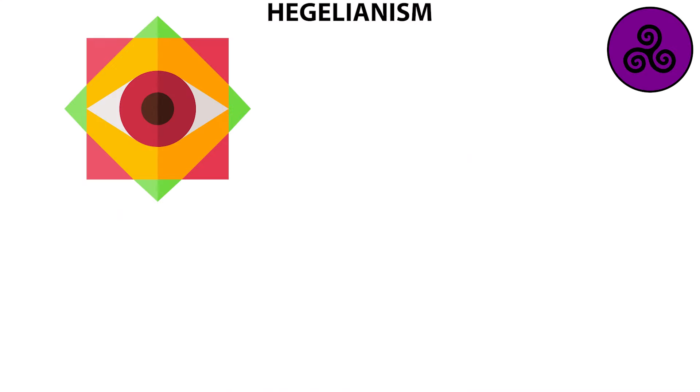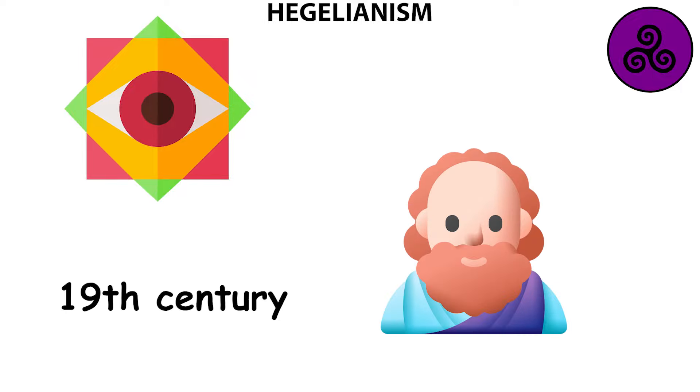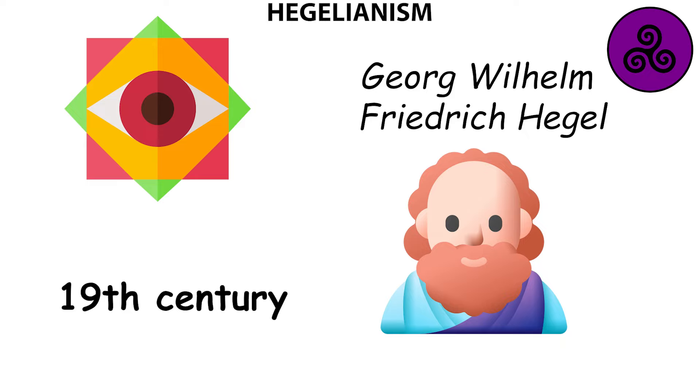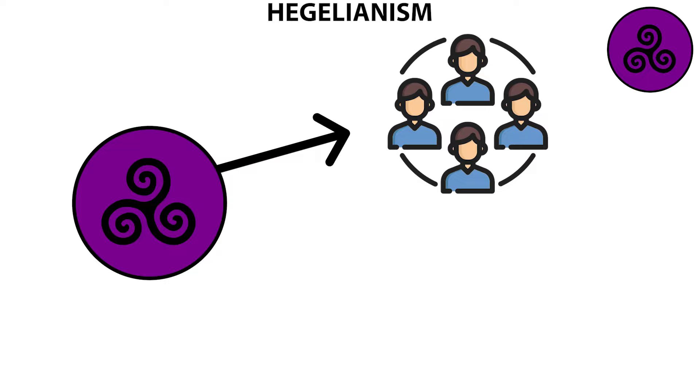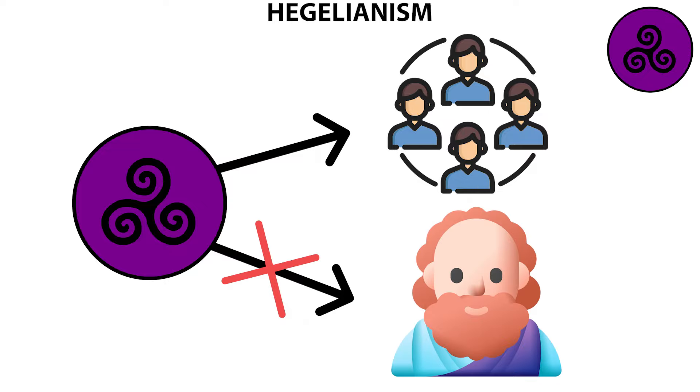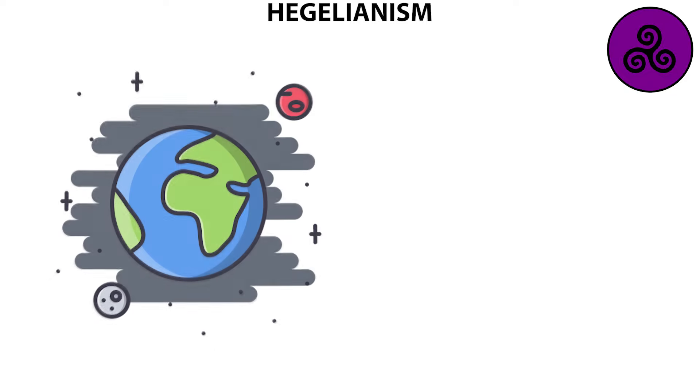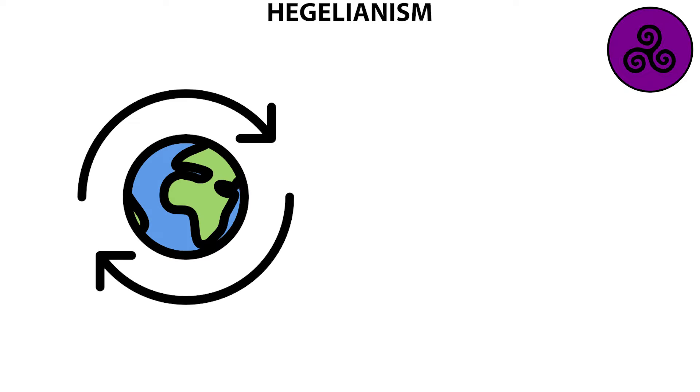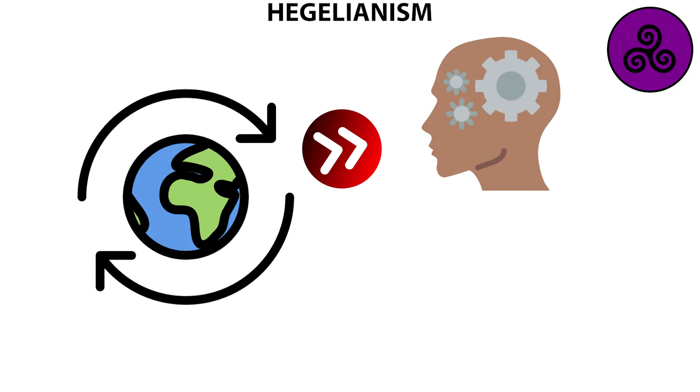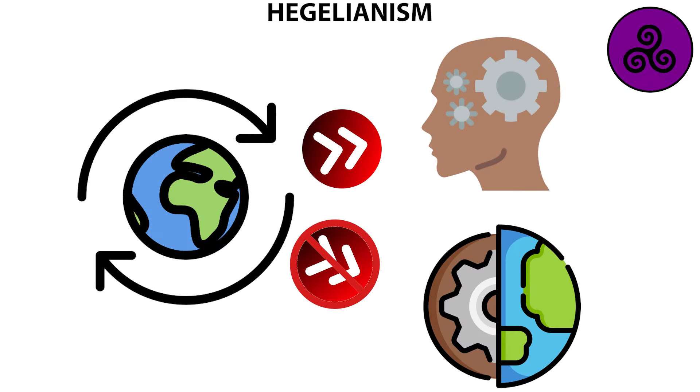Hegelianism is a philosophical movement that developed from the ideas of the 19th century German philosopher Georg Wilhelm Friedrich Hegel. It's important to note that the term Hegelianism is used to refer to the movements that followed Hegel's thought rather than Hegel's own philosophy. Hegel's philosophy places ultimate reality in ideas rather than in things. This means that the true nature of reality is found in our thoughts and concepts, not in the physical objects around us.